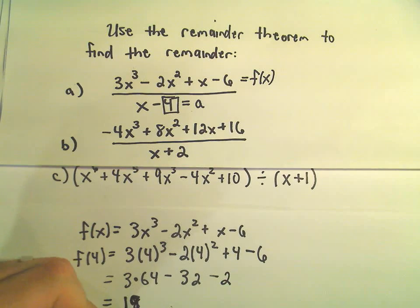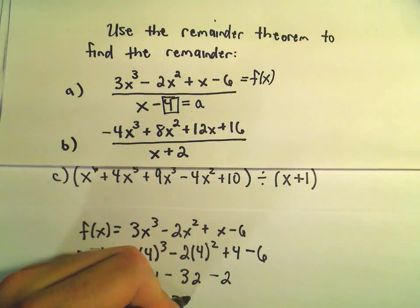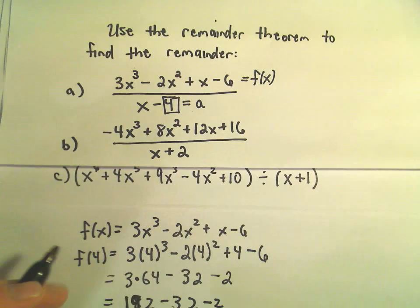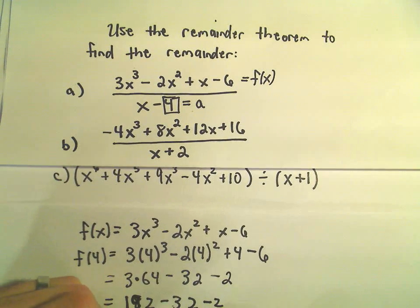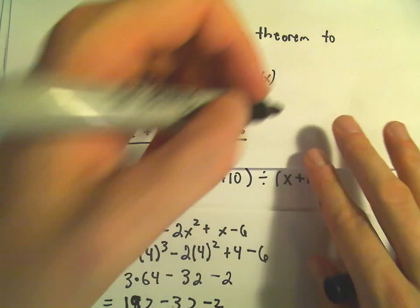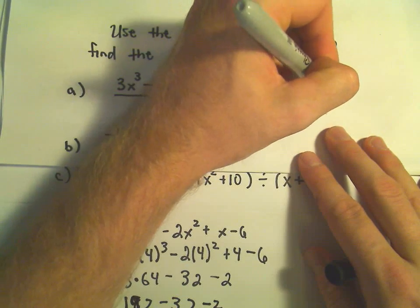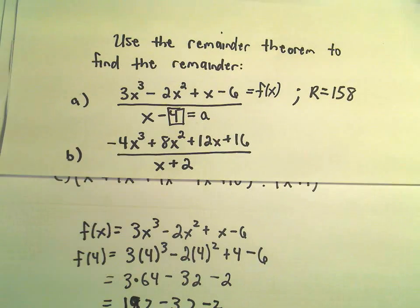So that would be 192 - 32 - 2. 192 - 32 would be 160 - 2 would be 158. So the remainder in this case when you do the long division would simply be 158.